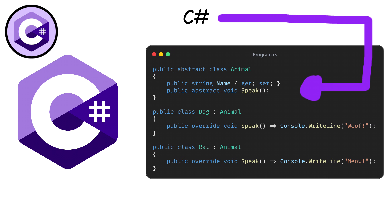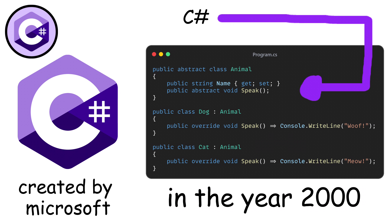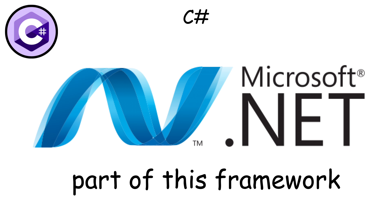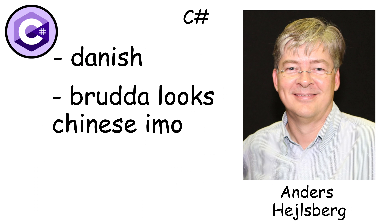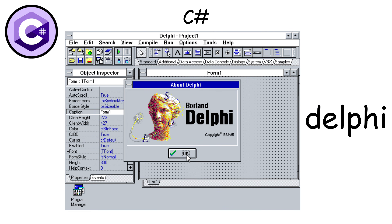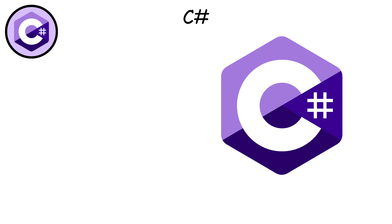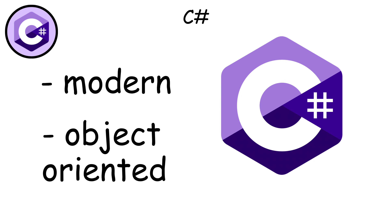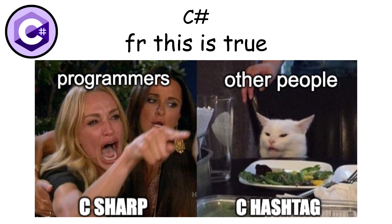C-sharp was created by Microsoft in 2000 as part of the .NET framework. It was designed by Anders Heilsberg, who also created Turbo Pascal and Delphi. The language was built to compete with Java and provide a modern object-oriented programming language for Windows development.